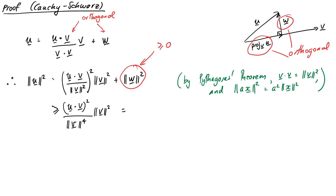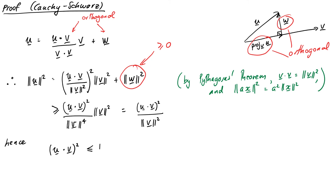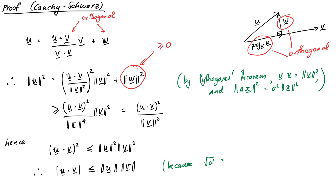Now we just expand our parentheses, and that results in cancelling out some ‖v‖'s. So that equals (u·v)² over ‖v‖⁴ times ‖v‖², which equals (u·v)² over ‖v‖². Taking our whole collection of statements, overall ‖u‖² ≥ (u·v)² / ‖v‖². Rearranging, we get (u·v)² ≤ ‖u‖²‖v‖². Taking the square root, we get |u·v| ≤ ‖u‖‖v‖, because the square root of a² equals the absolute value of a for any real number.